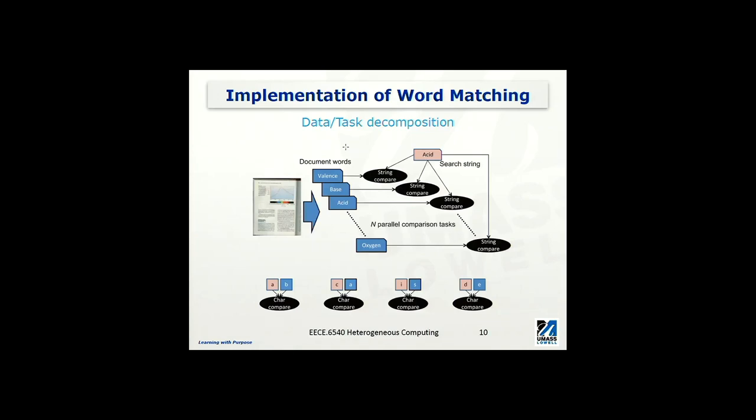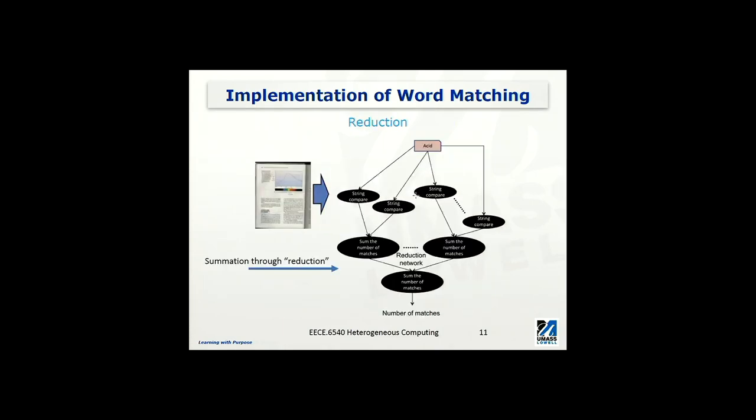So also in this particular example, we have data parallelism and also task parallelism. We have data parallelism because we break down this original dataset into smaller data units, datasets. And then we perform the same operation on them. And also we perform this comparison task in parallel. The second stage of the comparison is the collection, collecting the comparison result from these individual comparators.